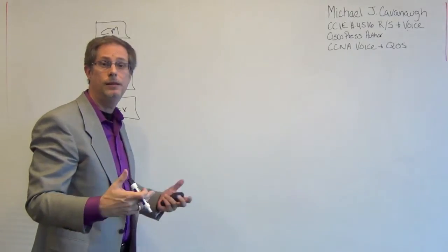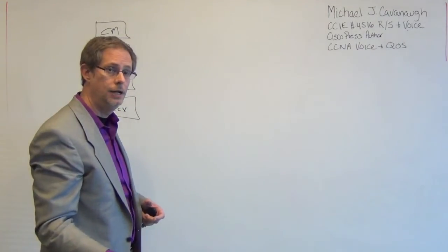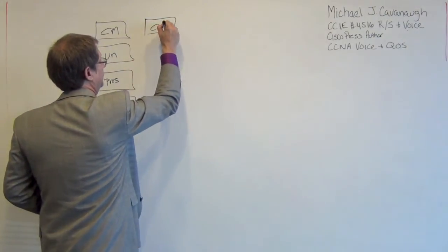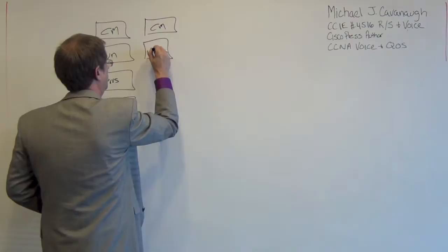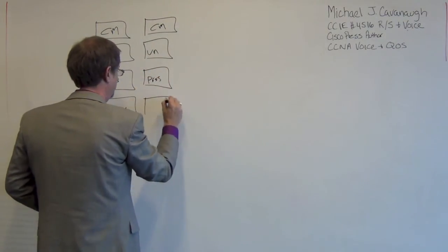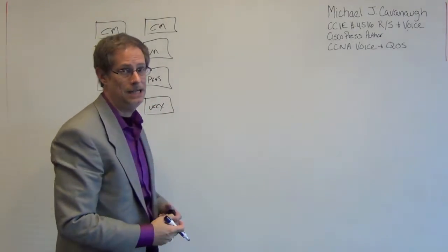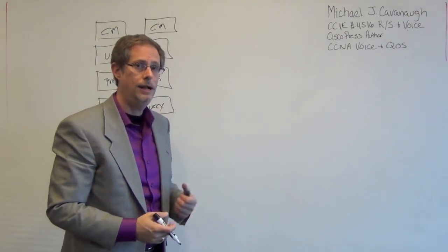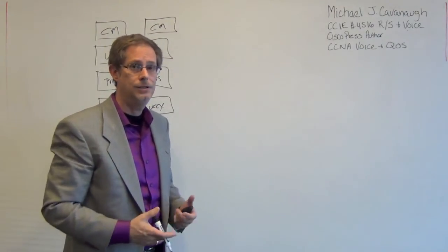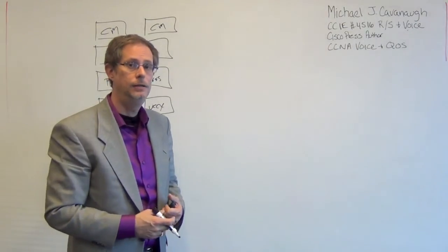Now, let's say I want to make them redundant — if one fails, I want something else to take over for it. In order to do that, I've got to duplicate this. I need another call manager server, another Unity server, another presence server, and another contact center server. That means to run these four applications in highly available mode, I need eight servers. That's kind of a problem. How do we get around that? We virtualize them.